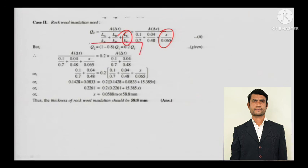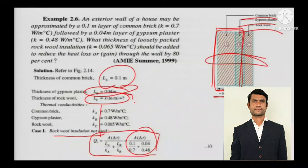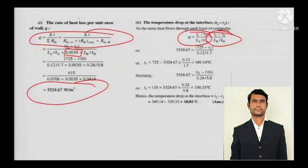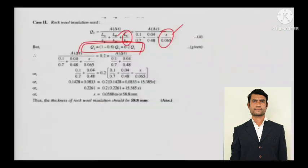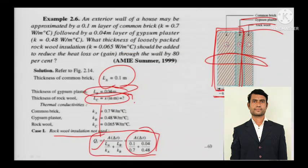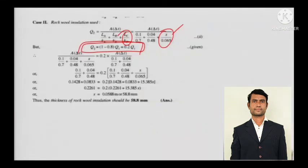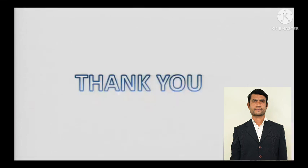This is the main equation. Put Q2 in terms of Q1 — you have Q1 from the beginning. Just put it in the equation and get the rock wool insulation thickness needed to reduce heat loss by 80 percent.